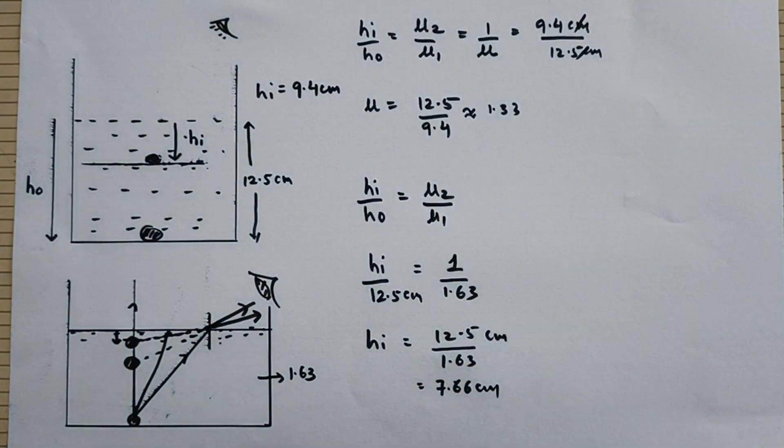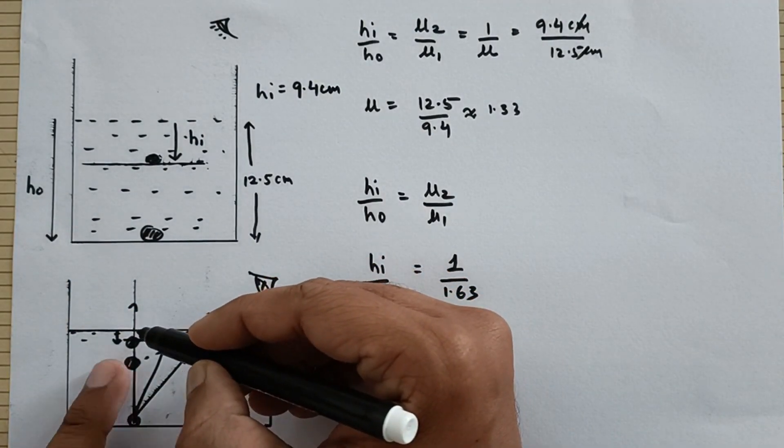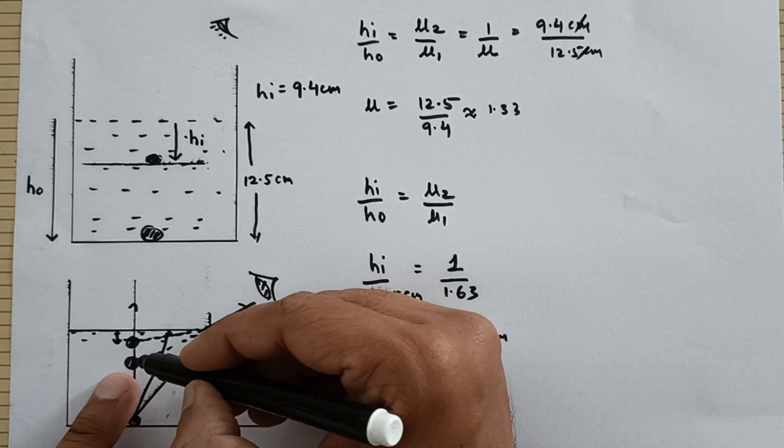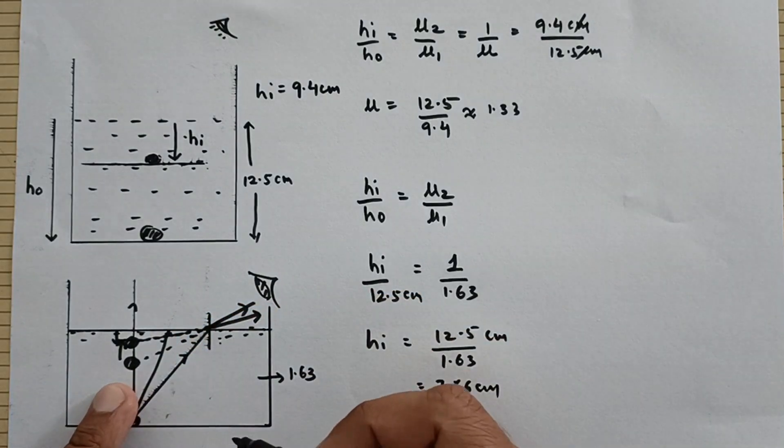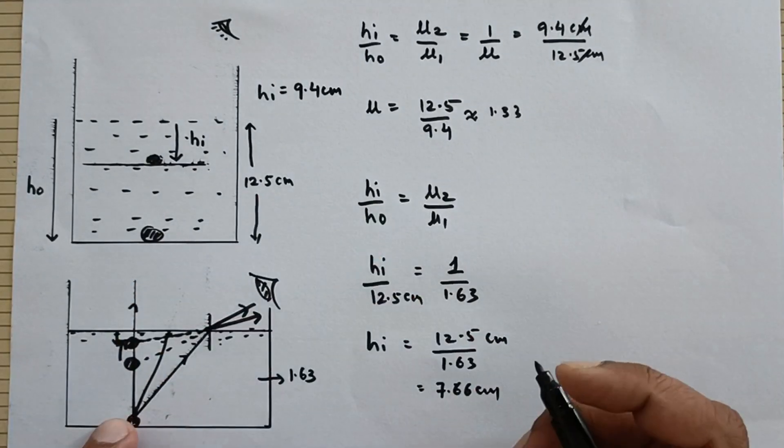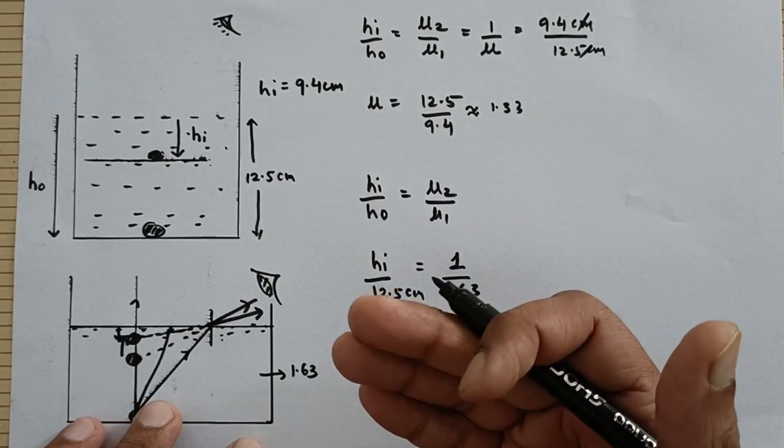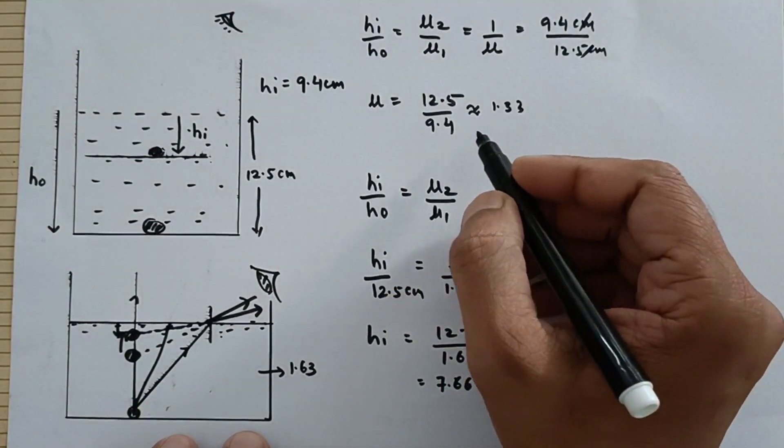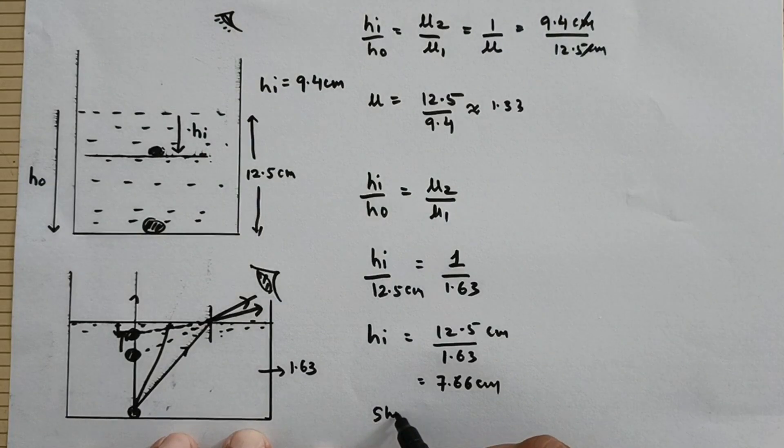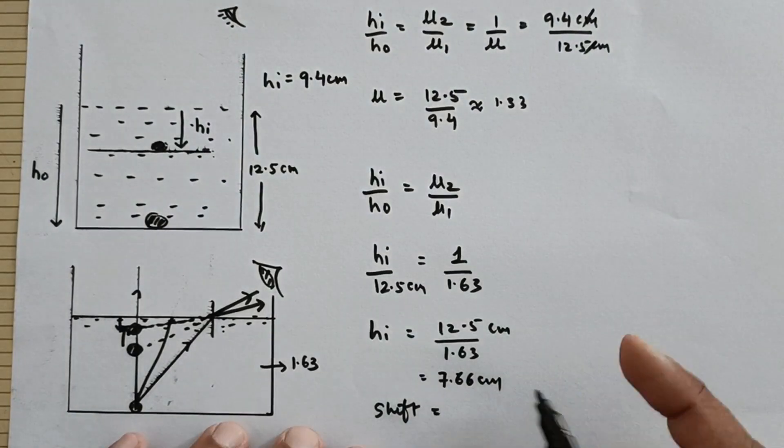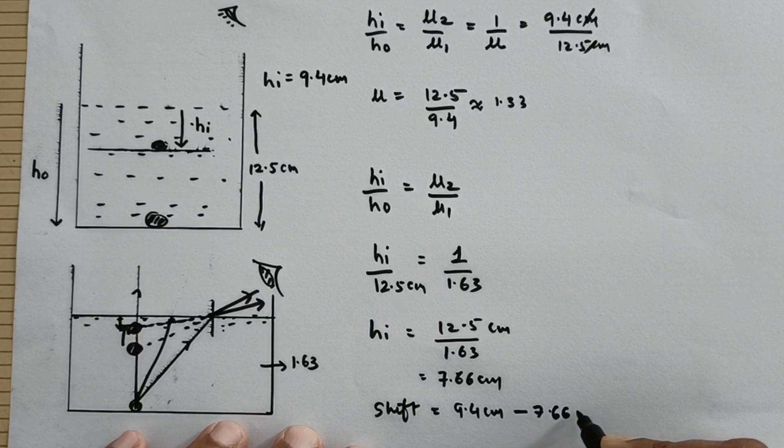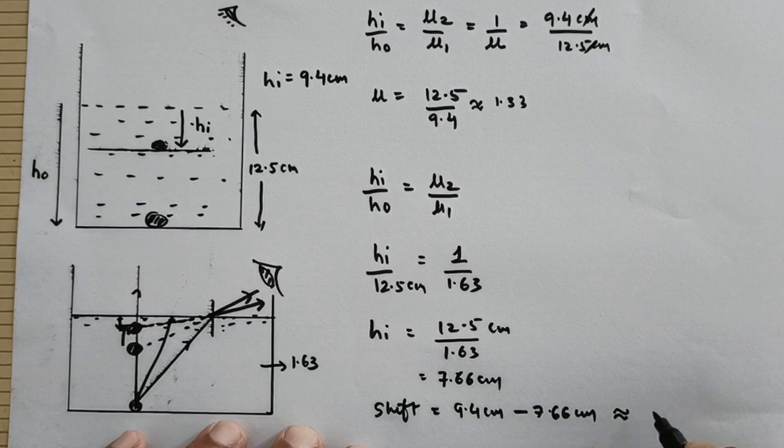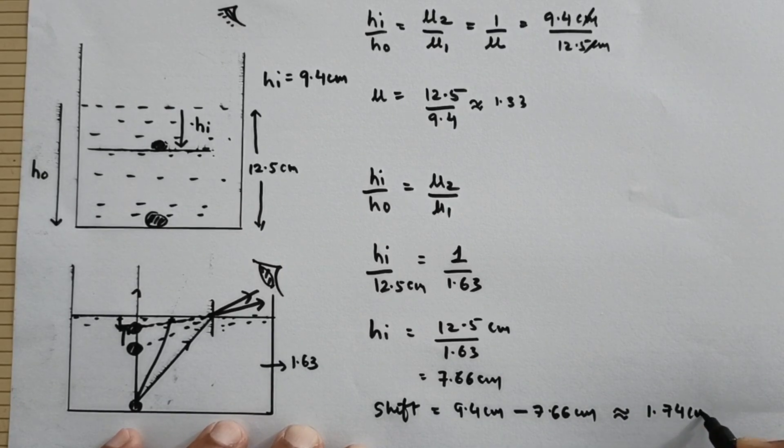Now they are asking the distance through which you are supposed to move the microscope. Earlier the microscope was focusing here now the microscope has to be shifted by this much of the distance. The difference in both the apparent depths is the shift of the microscope. So the shift of the microscope should be done from 9.4 centimeters minus 7.66 centimeters which turns out to be approximately 1.74 centimeters.